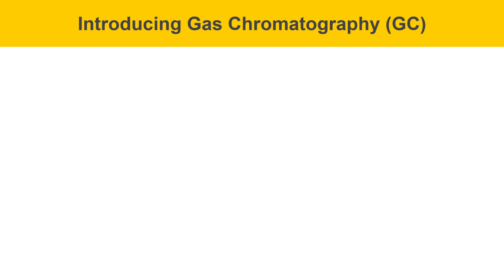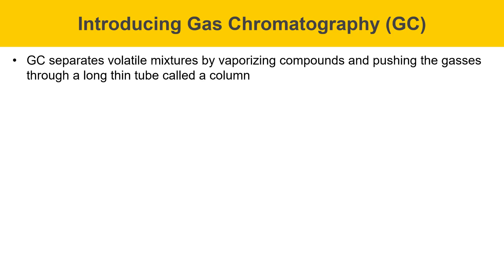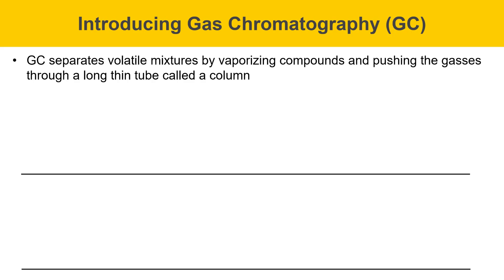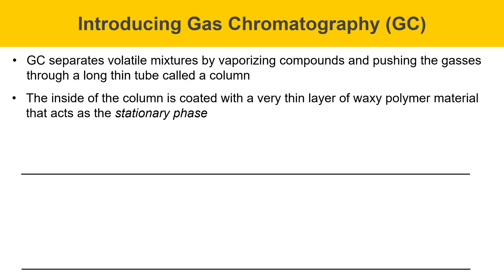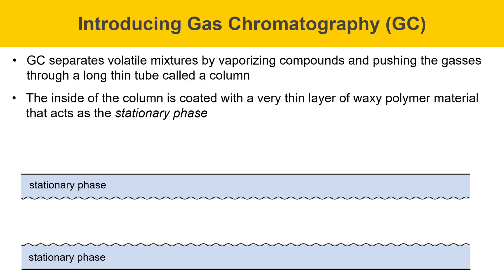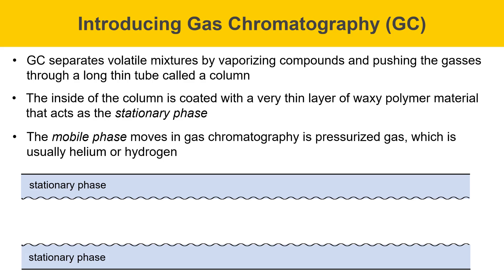This slide introduces gas chromatography, or GC. GC is a type of chromatography that separates volatile mixtures by vaporizing compounds and pushing the gases through a long, thin tube called a column. I'll draw a diagram showing a cross-section of a column to illustrate what is happening inside of it. Imagine that these lines represent the cross-section of a long, thin tube. The inside of the column is coated with a very thin layer of a waxy polymer material that acts as the stationary phase. The mobile phase that moves in gas chromatography is a pressurized gas, which is usually helium or hydrogen. The mobile phase moves through as a gas, and compounds associate either with the stationary phase, where they're still, or in the mobile phase, when they move.